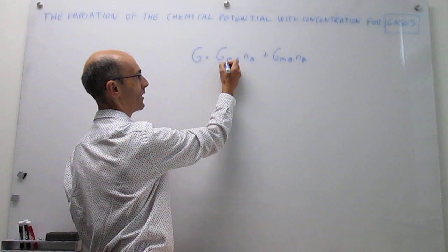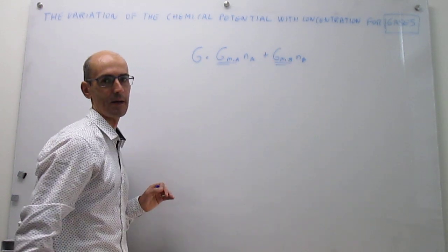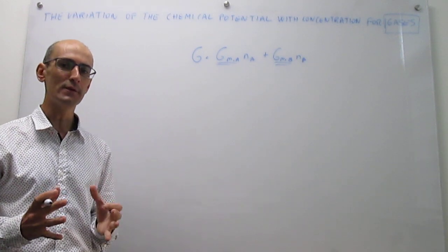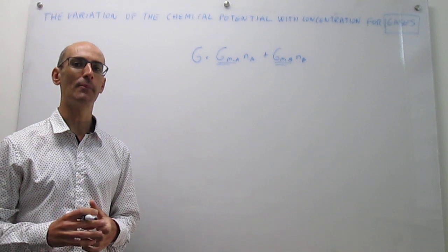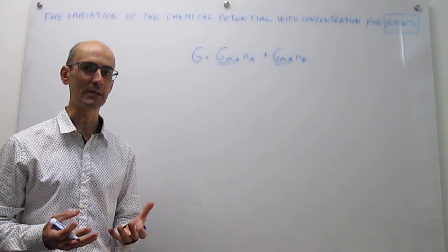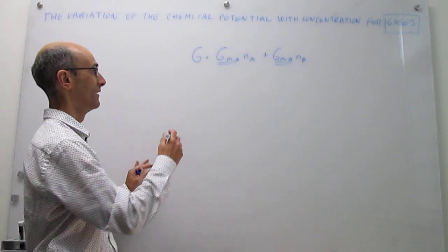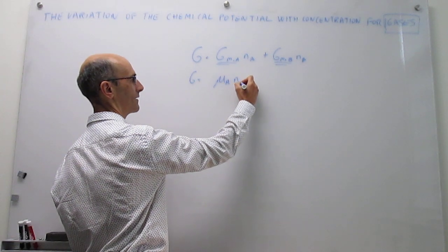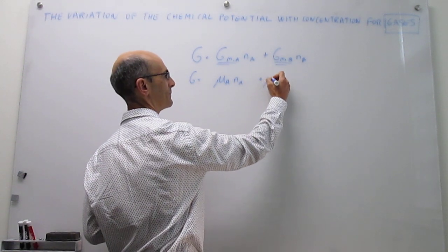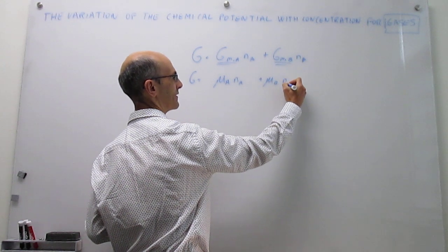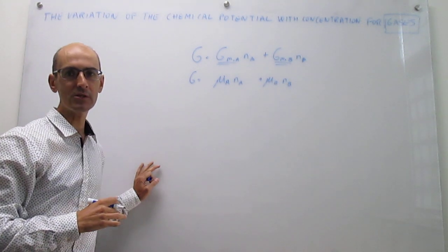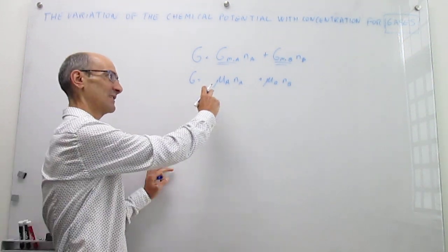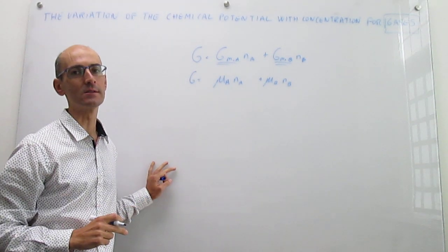The question then is, how do you obtain these partial molar Gibbs energies for the components? The first thing we are going to do is redefine these partial molar Gibbs energies and call them chemical potentials — they are exactly the same thing. The total Gibbs energy of a mixture is the chemical potential of A multiplied by the number of moles of A, plus the chemical potential of B multiplied by the number of moles of B. This is for a binary mixture of components A and B. These chemical potentials are just the molar Gibbs energies of those components.